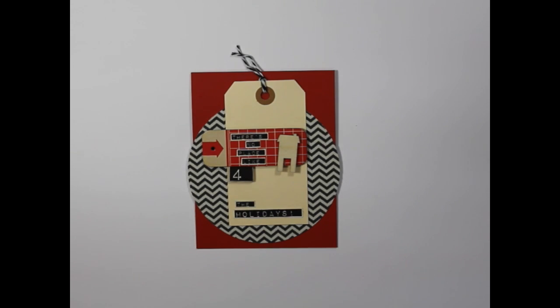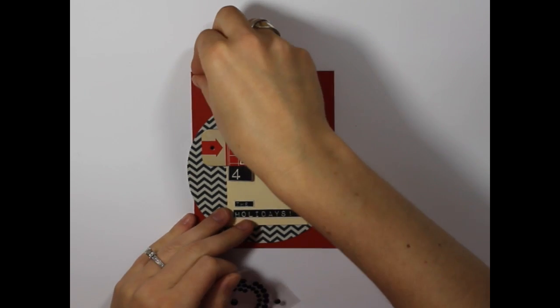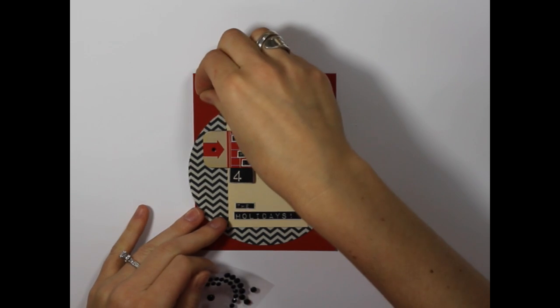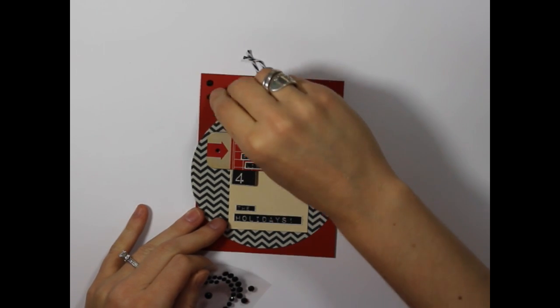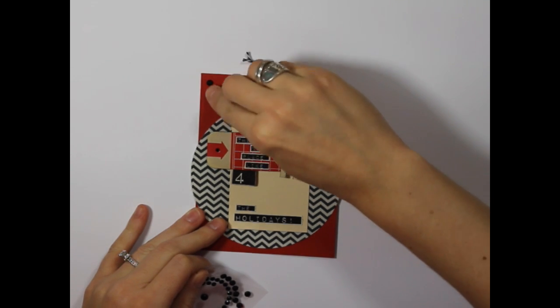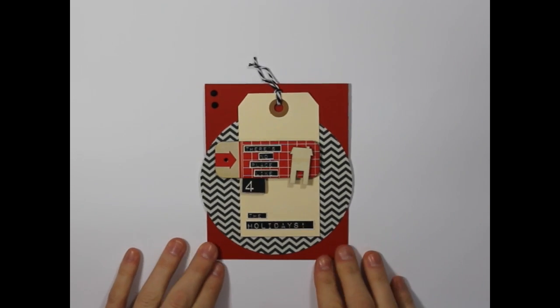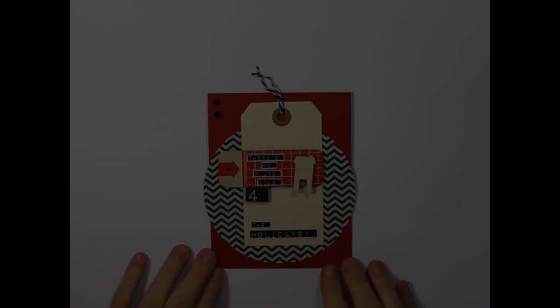For the final step of our card, I decided I wanted to put a couple of little black rhinestones on the top edge of our card here, just to give it a little more visual impact. And there you have it, there's our finished card. I hope you've enjoyed this Finley Friday card tutorial.